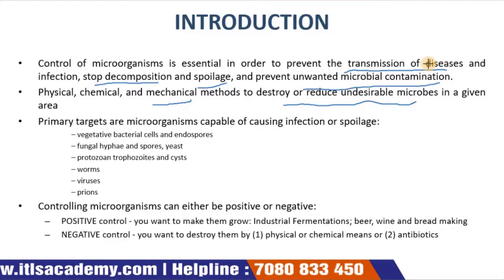The primary targets of microorganisms capable of causing infection or spoilage include vegetative bacterial cells and endospores, fungal hyphae and spores, yeast, protozoan trophozoites, worms, viruses, and prions.